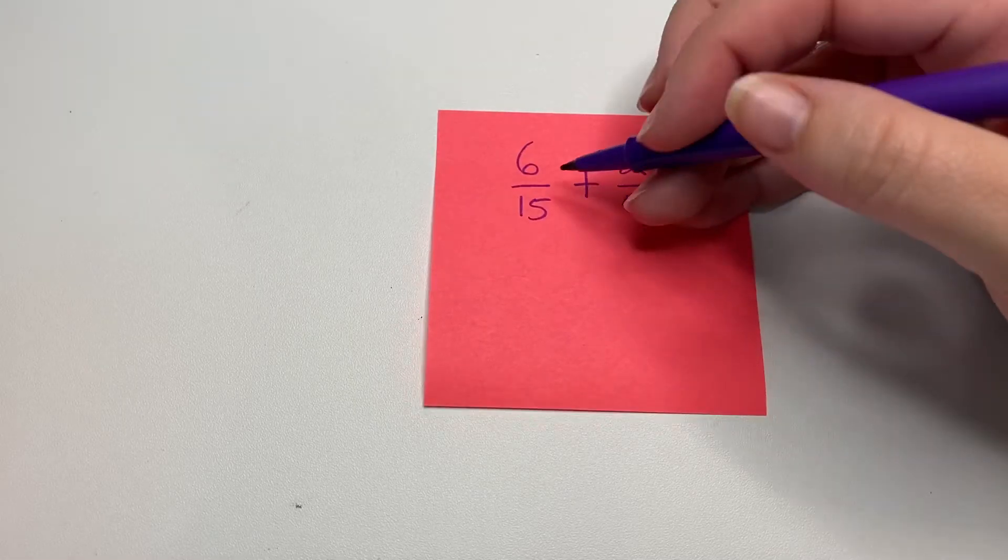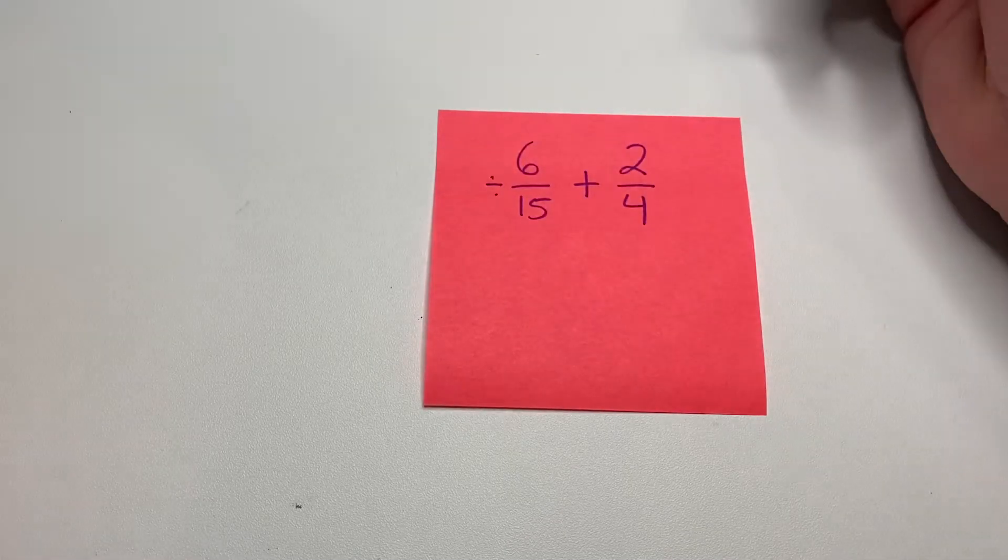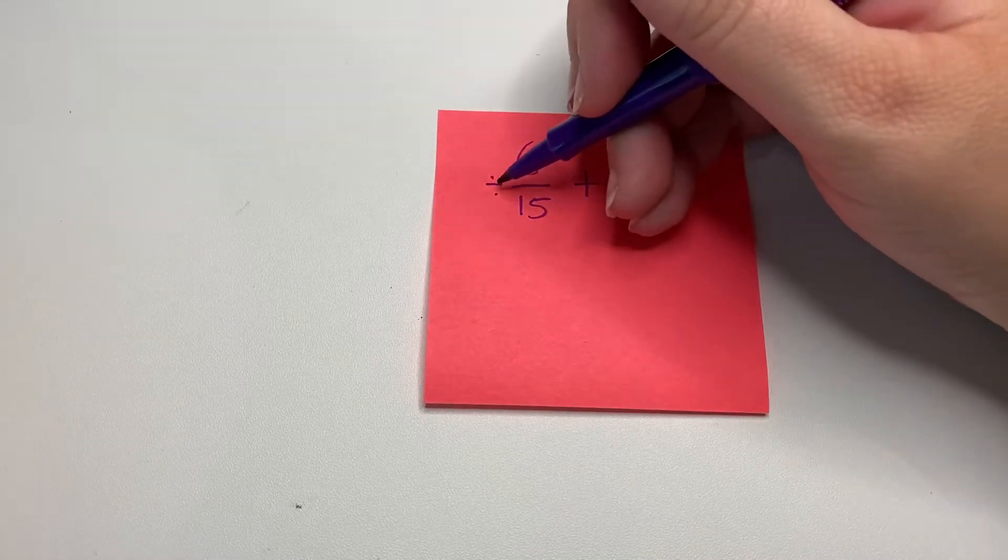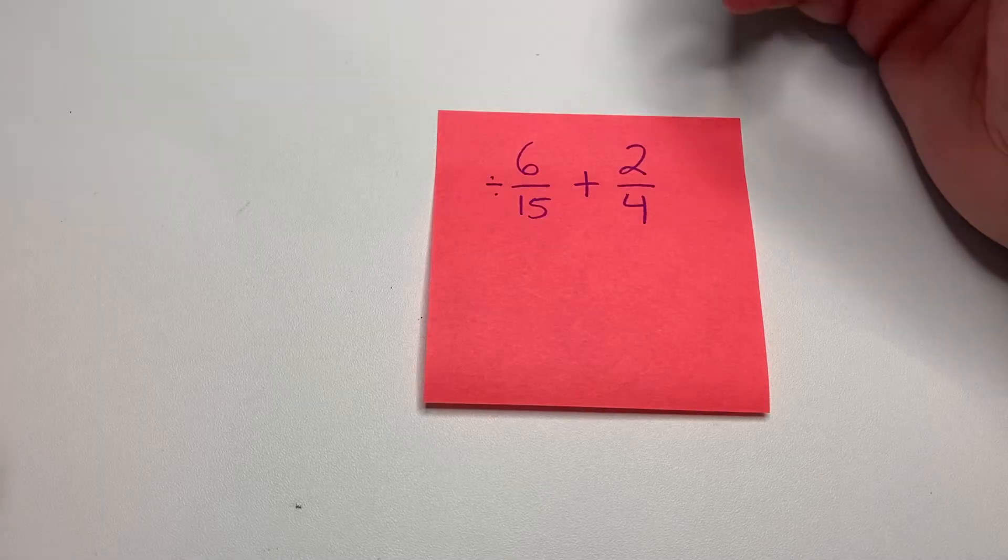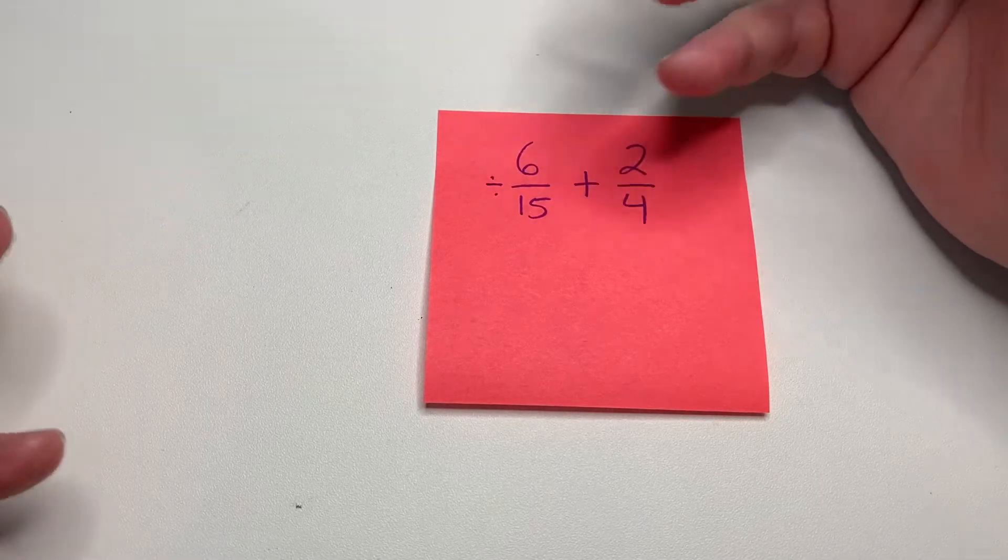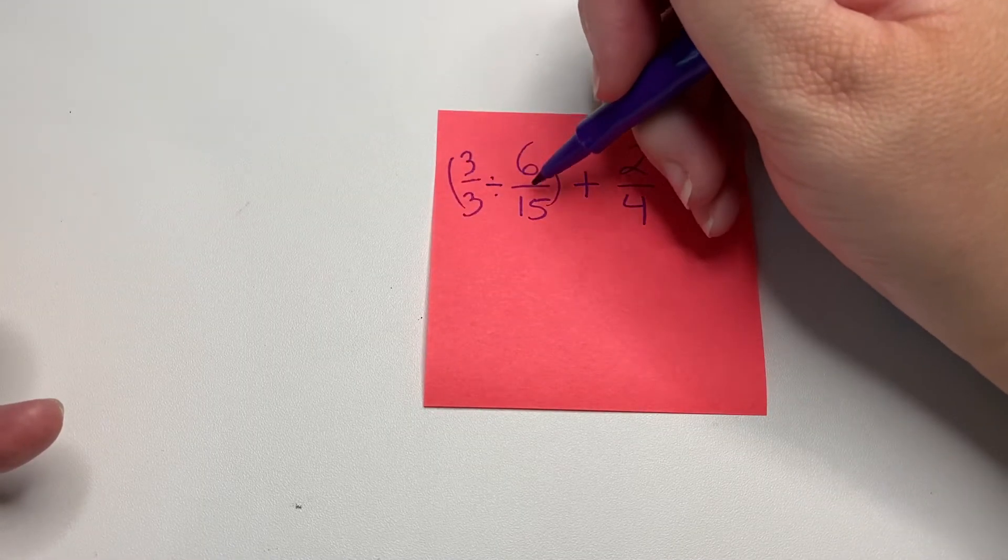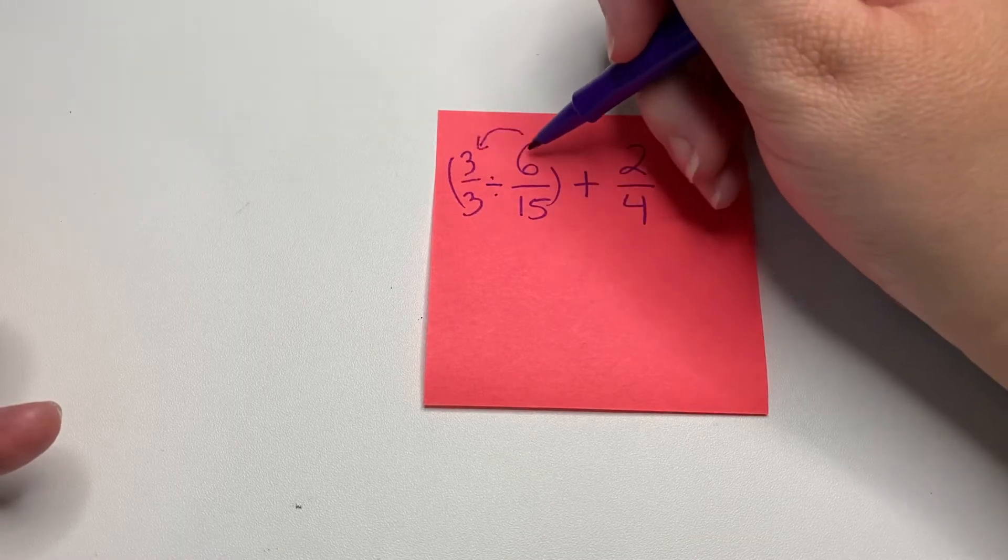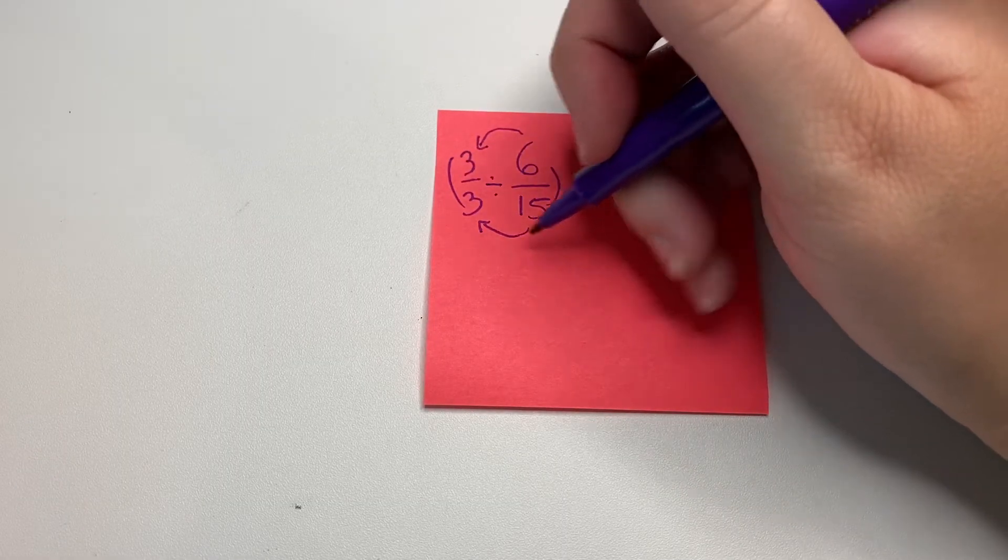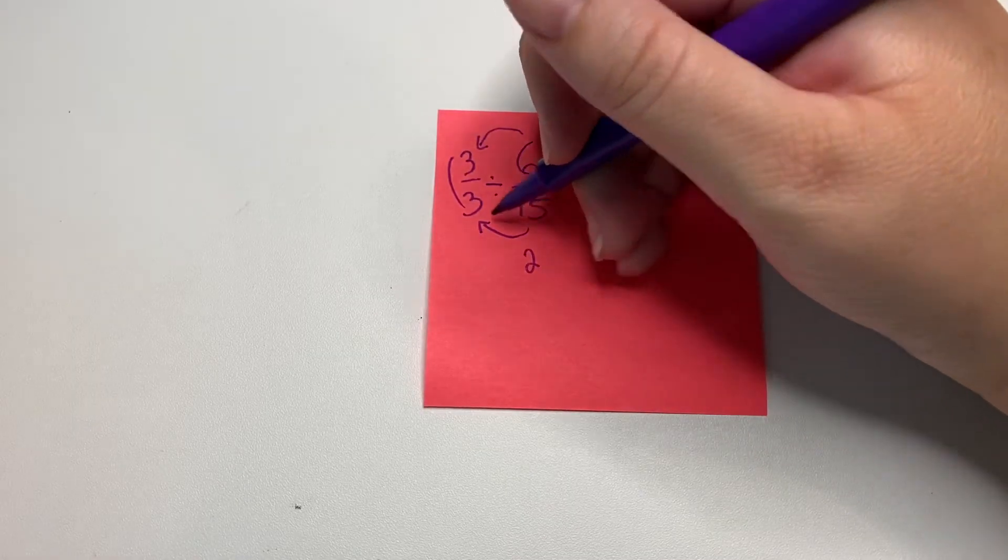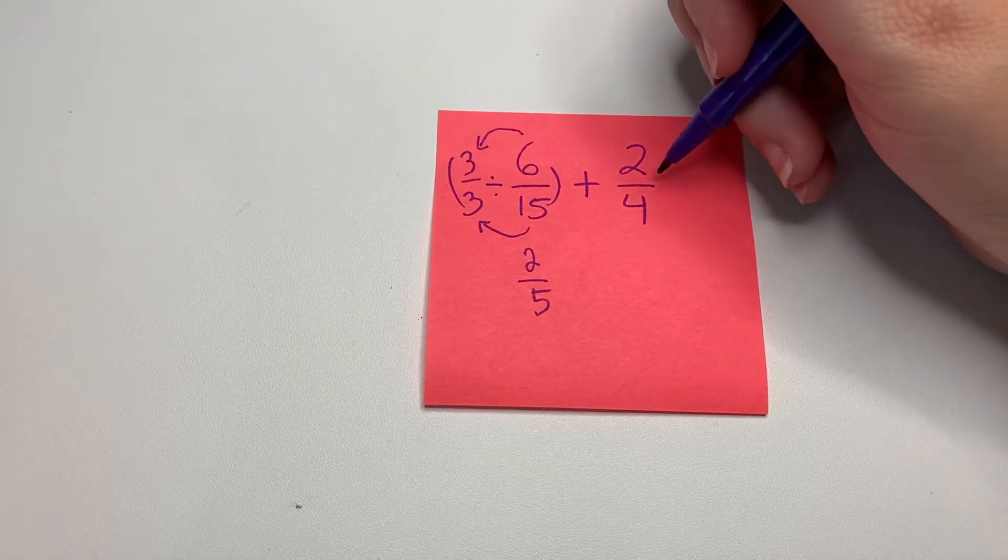So, 6/15 can be simplified because three goes into both of them. So instead of... when we're simplifying, we're going to divide, and then when we're trying to get matching denominators, that's when we would multiply. So we're going to divide by 3 over 3, and except we're going the backwards way. So this is actually 6 divided by 3 and 15 divided by 3. So 6 divided by 3 is 2 and 15 divided by 3 is 5. So 2/5 might be easier for you to work with. And then, 2/4...